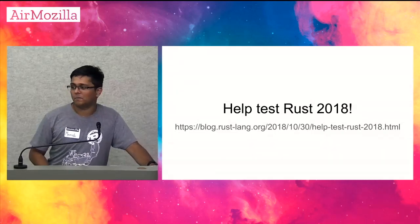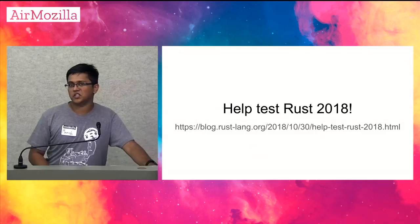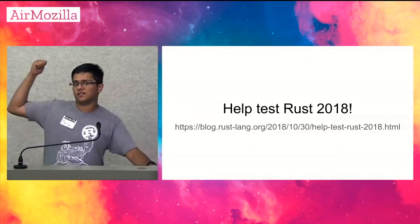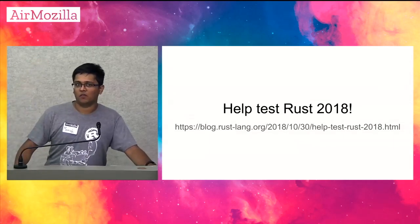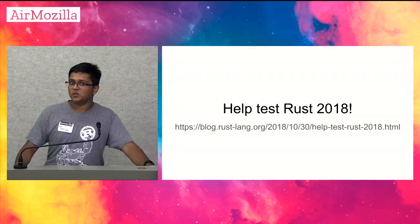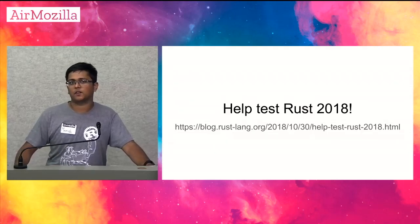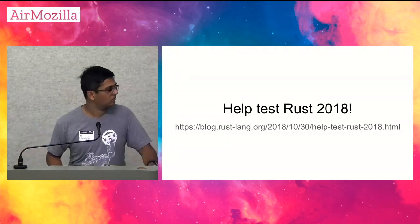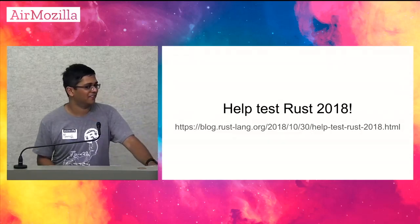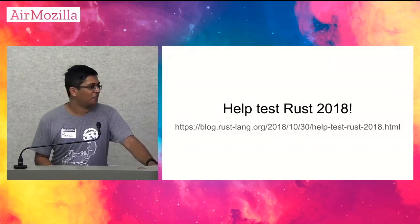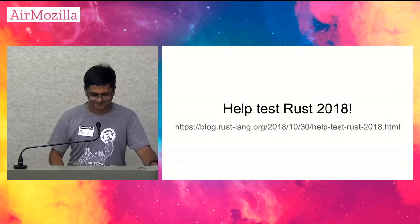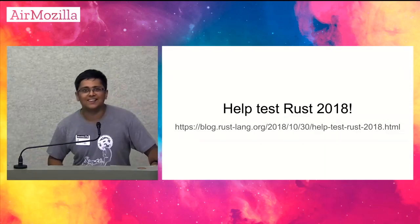Just one announcement: the Rust 2018 edition is being released soon, and you should help test it. It's got all these goodies like better paths and eventually async/await. Also, Clippy is better in the edition. Non-lexical lifetimes — yes, that's happening. Non-lexical lifetimes are finally happening. After years of saying it's coming, they're happening. For real this time, I promise.